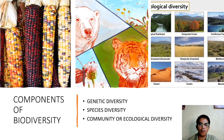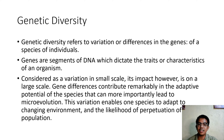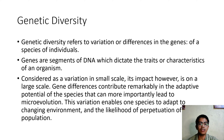Biodiversity has three components: genetic diversity, species diversity, and community or ecological diversity. Genetic diversity refers to variation or differences in the genes of species or individuals. Genes are segments of DNA responsible for our characteristics and are the unit of heredity. Their variation happens on a small scale but its impact is on a large scale. Changes in genes are the first step in the evolution of individuals, making a new population.